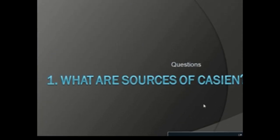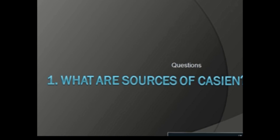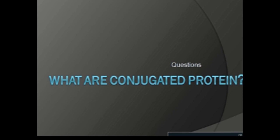There are some questions about this topic. Question one: what are the sources of casein? The main source is milk and all dairy products like cheese, butter, and yogurt, which contain casein. Next: what are conjugated proteins? Conjugated proteins are those that contain a prosthetic group, which is a non-proteinous part. In casein, this is the phospho group, which is responsible for the functional activity of the protein.